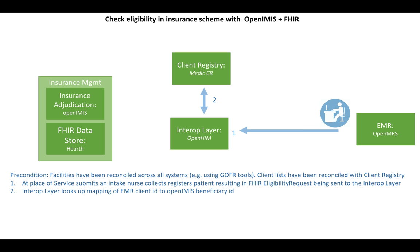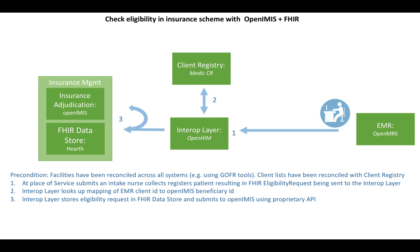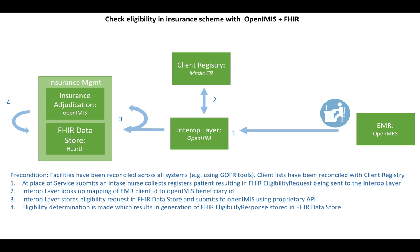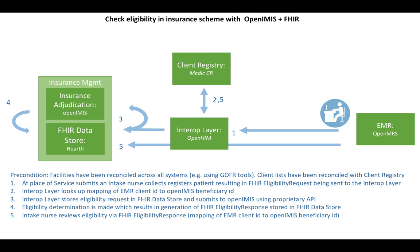The interoperability layer looks up a mapping of the EMR client ID to the OpenIMIS beneficiary ID. The interoperability layer then stores the eligibility request in the FHIR data store as well as submits to OpenIMIS the request or query using its proprietary API. Once an eligibility determination is made, this results in a FHIR eligibility response, which is made available in the FHIR data store so that the intake nurse can review that eligibility claim using a FHIR eligibility response — again mapping the EMR client ID to the OpenIMIS beneficiary ID.